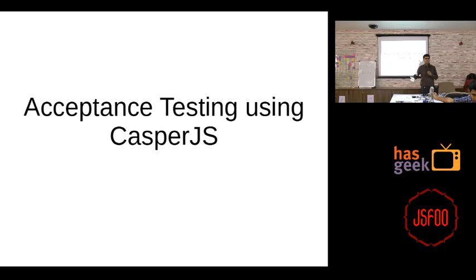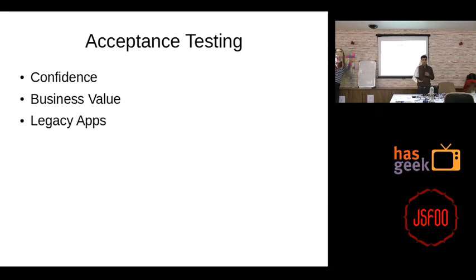You also get confidence in your product. You're sure that the application doesn't break in the main workflows you have. The real value of automated testing: confidence — I can change anything and if I have enough coverage and tests, I'm confident that if my tests pass, everything works. I can ship early, ship often, and refactor fearlessly because of the confidence the tests give me.